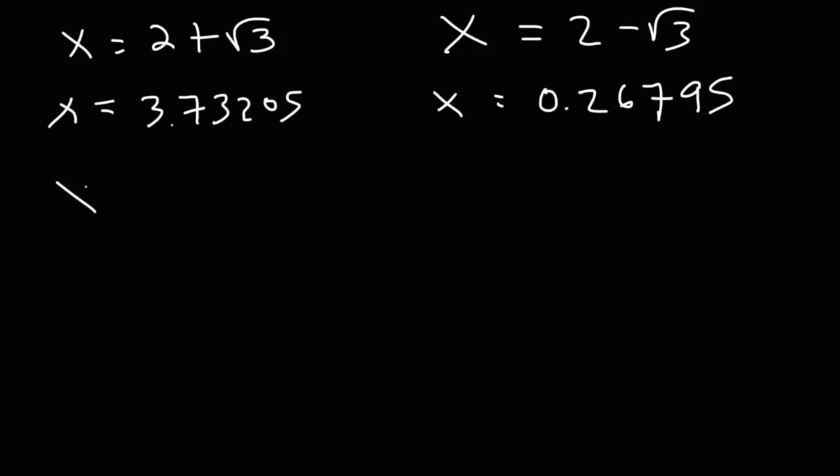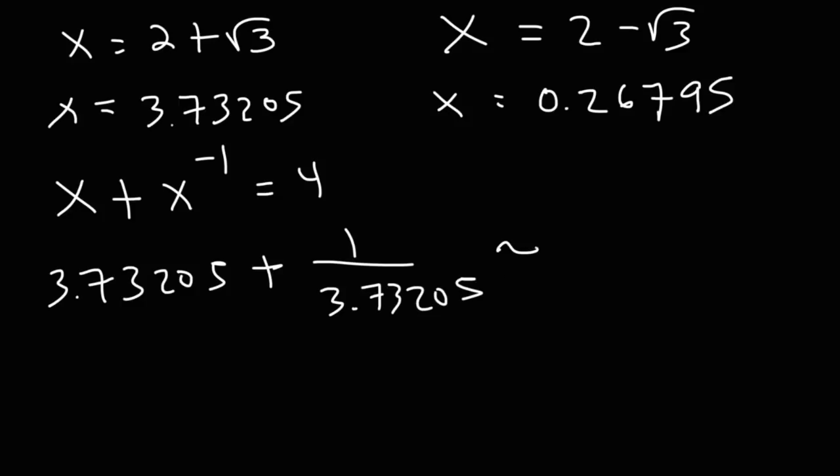So let's see if our answers are correct. So this is the original equation. x plus x to the minus 1 is equal to 4. So 3.73205 plus 1 over 3.73205. This should approximately be equal to 4. Go ahead and type this into your calculator. On the left side, you should get 3.99999925, which is very close to 4. So these answers are correct.